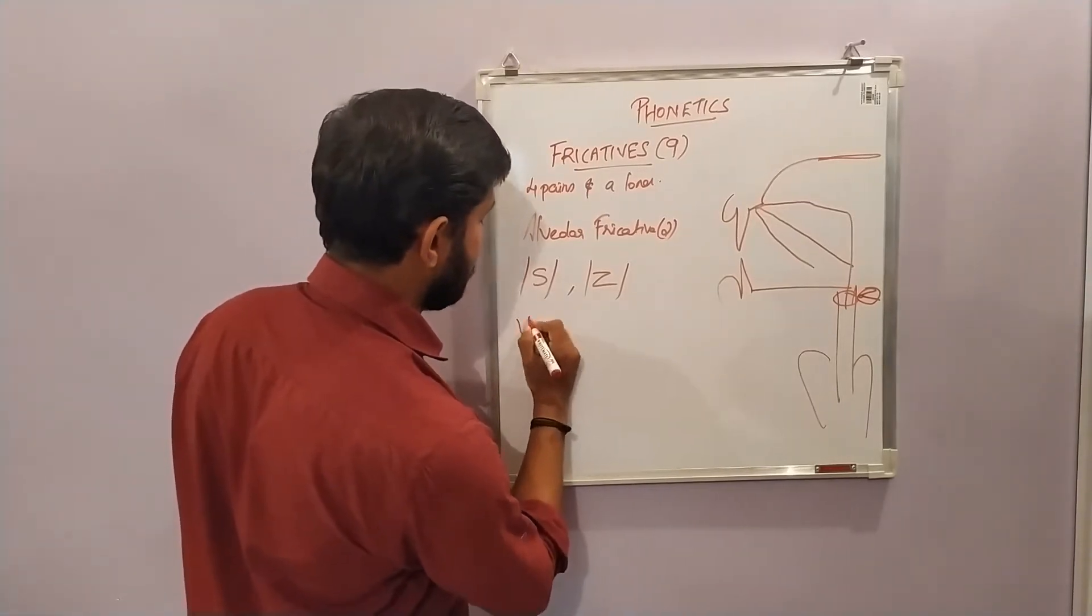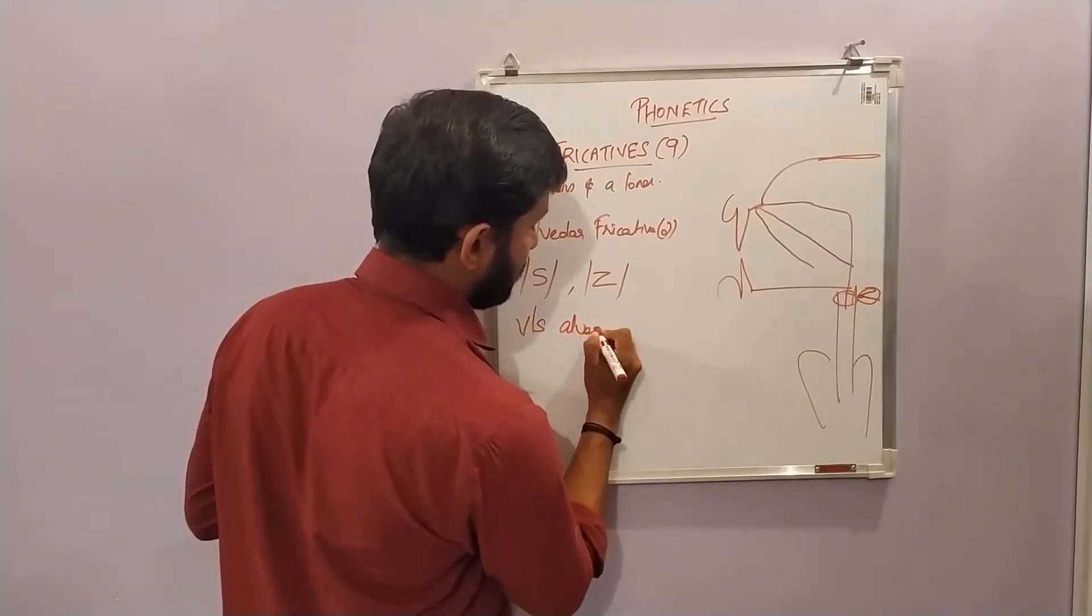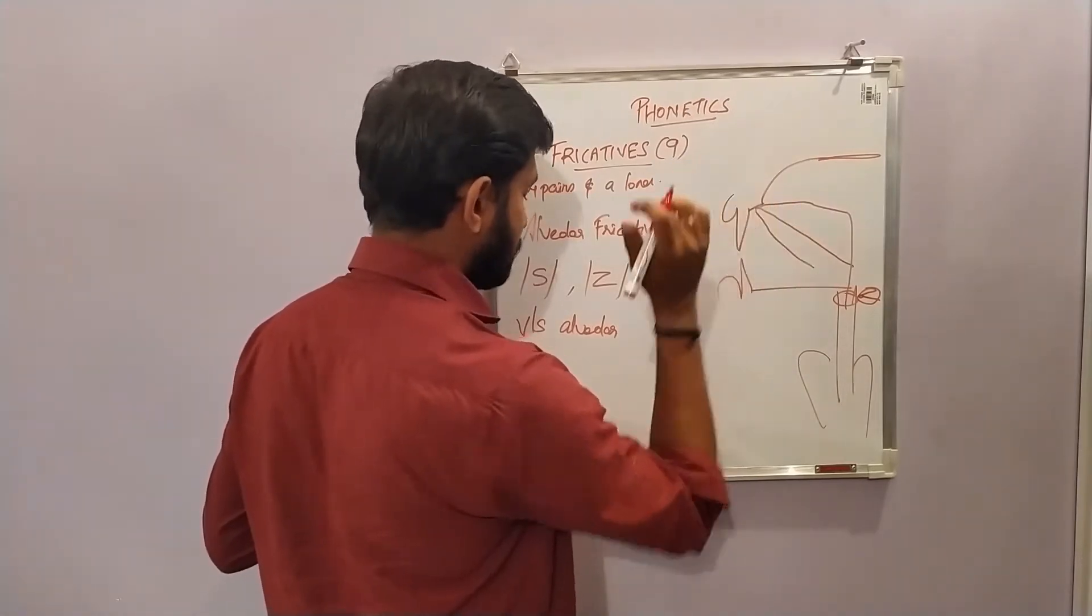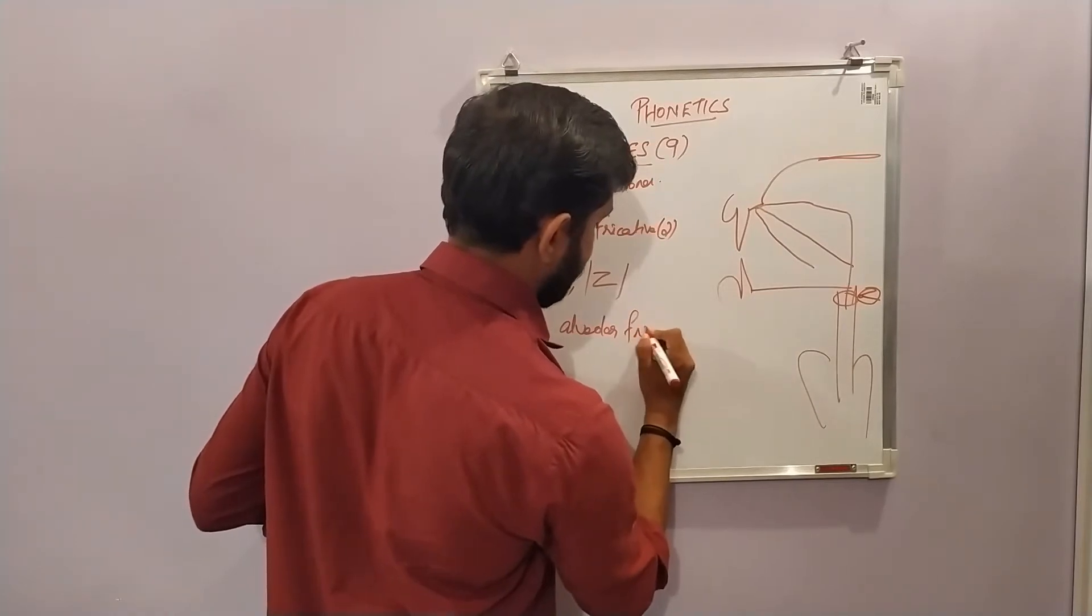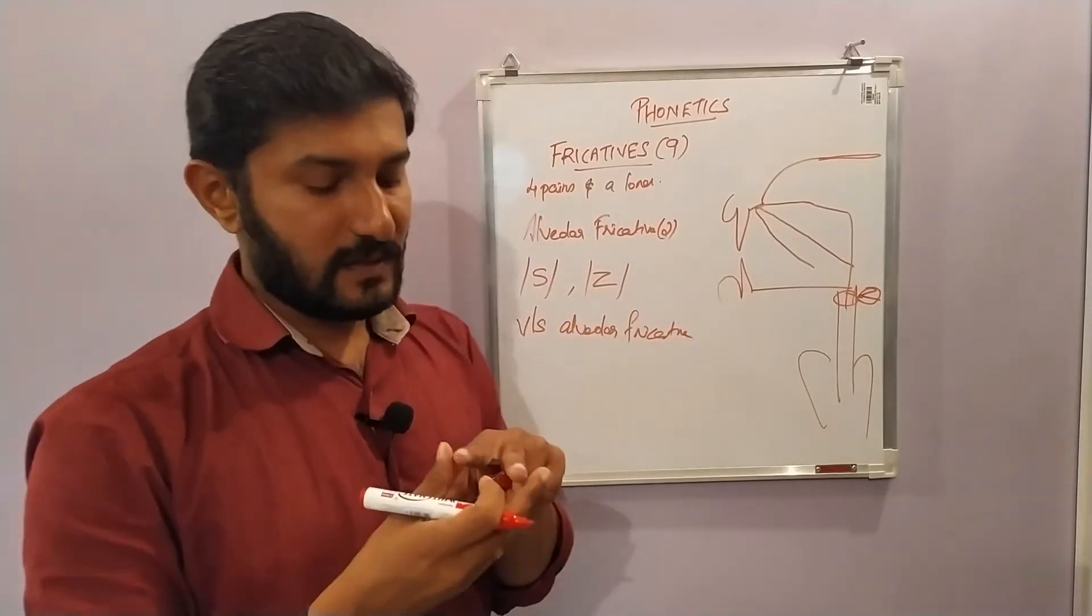/s/ can be described as a voiceless alveolar fricative. The articulating organs are the alveolar ridge and the tip of the tongue.